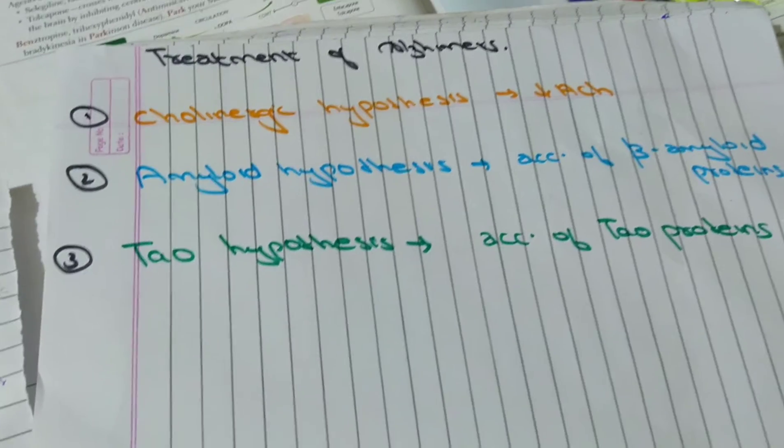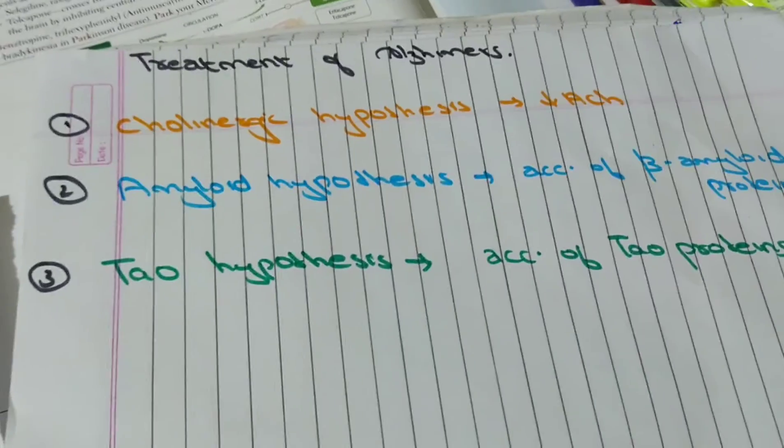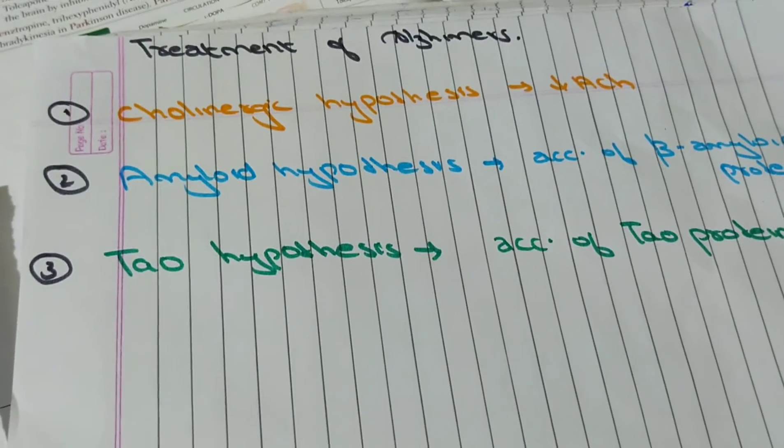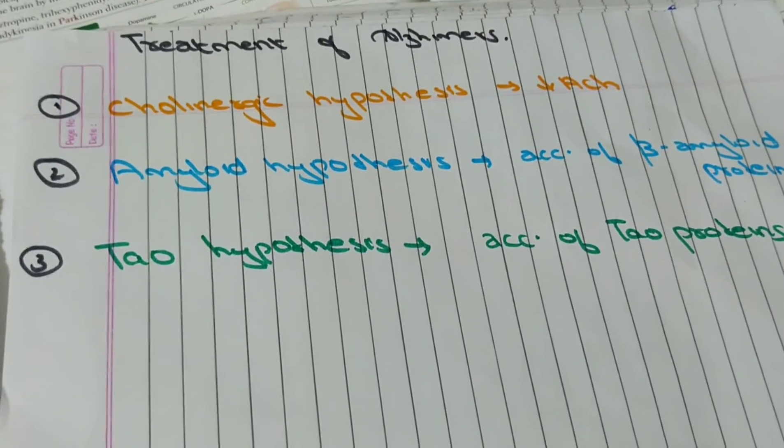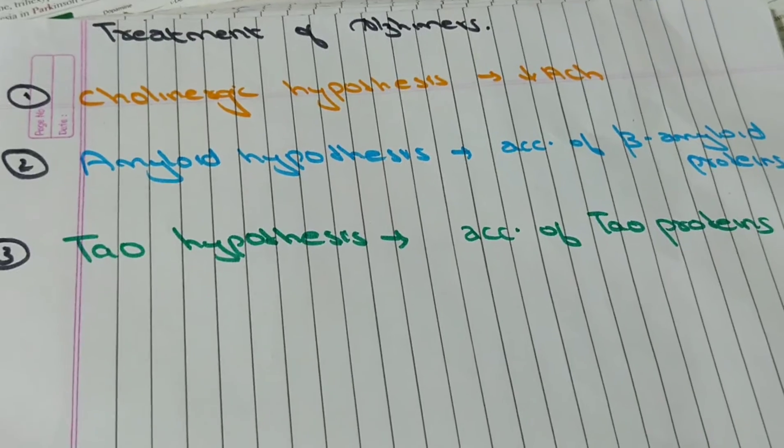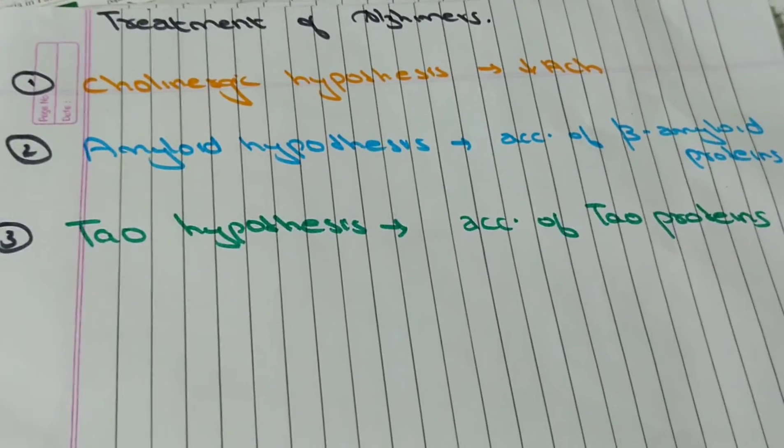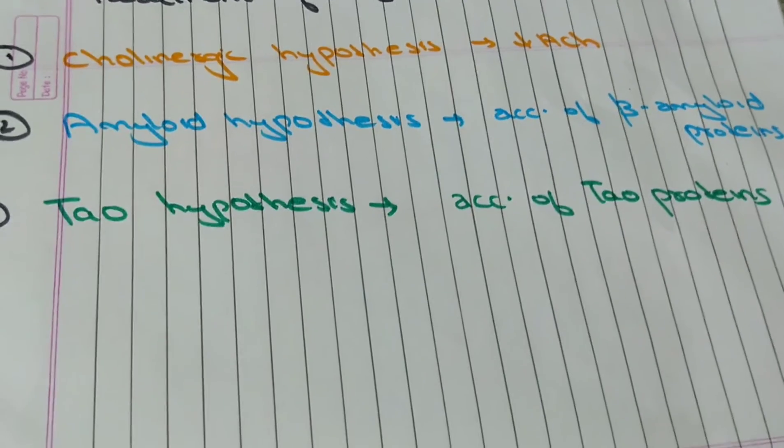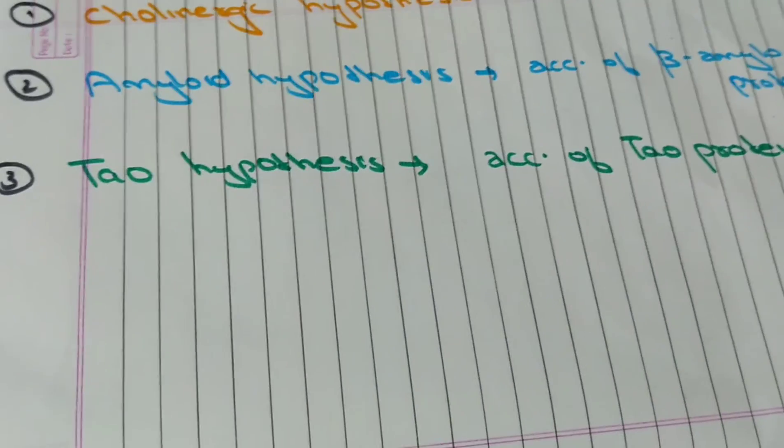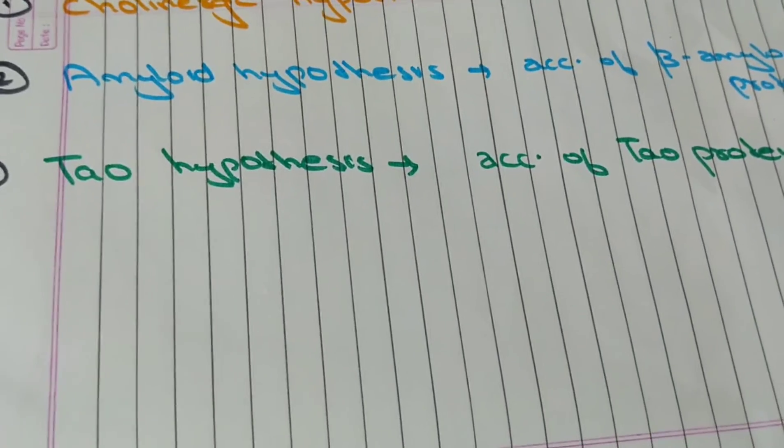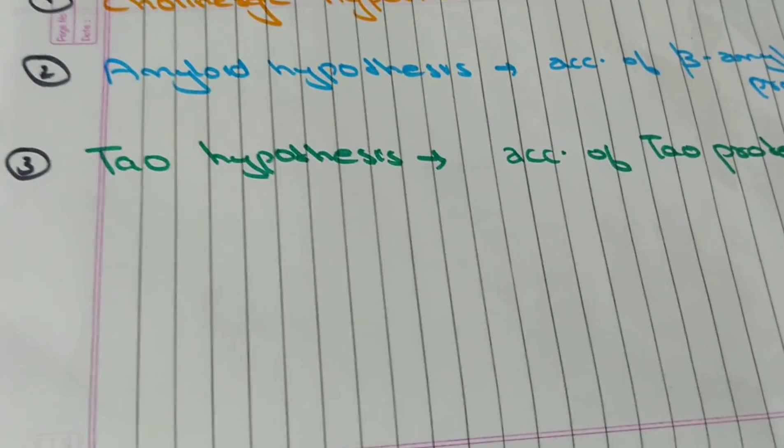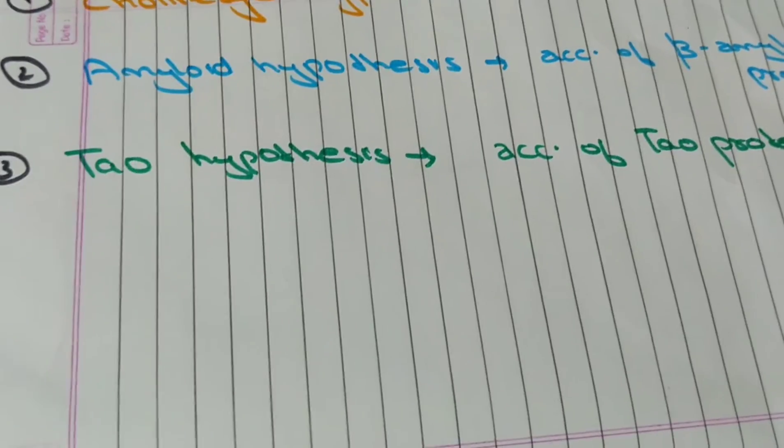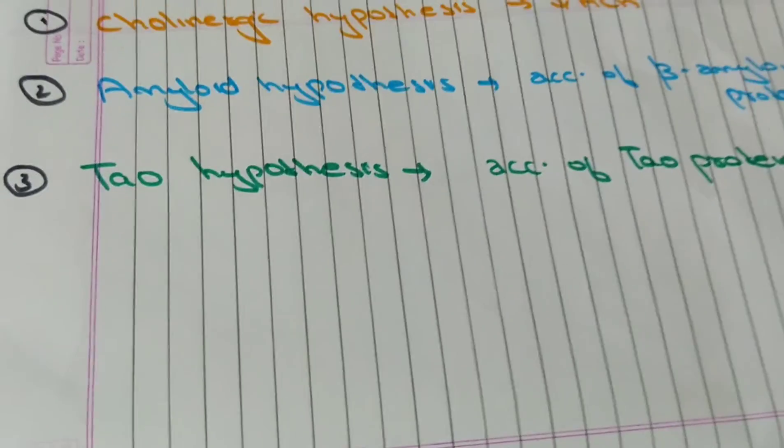Talking about the treatment of Alzheimer's, let's talk about the pathogenesis. Alzheimer's is said to be due to 3 reasons. One is cholinergic hypothesis which is due to less acetylcholine. The second one is amyloid hypothesis which is due to accumulation of abnormally folded beta amyloid proteins. Beta amyloid proteins are metabolic products present between brain cells. These beta amyloid clumps form plaques which disrupt communication between neurons.